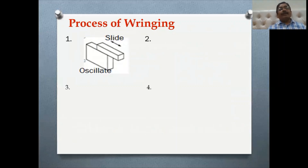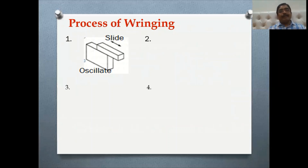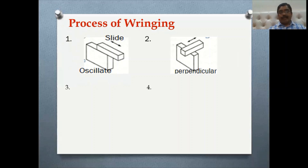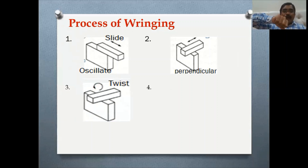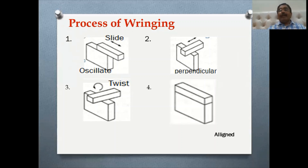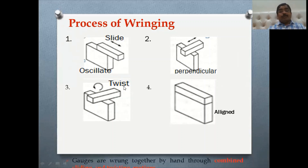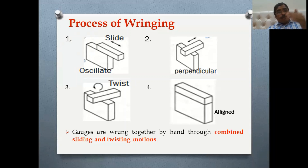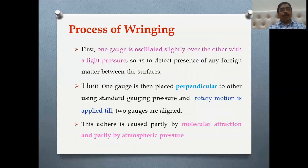The ringing process has four basic steps. First, take two slip gauges and oscillate — slide one slip gauge over the other so that any foreign particles are removed. Second, place the two slip gauges perpendicular to each other. Third, apply a twisting moment so they get aligned with each other. The sliding and twisting moment are the key actions in the ringing process.